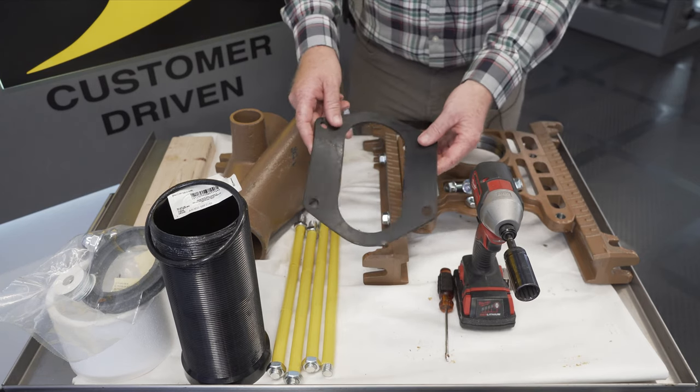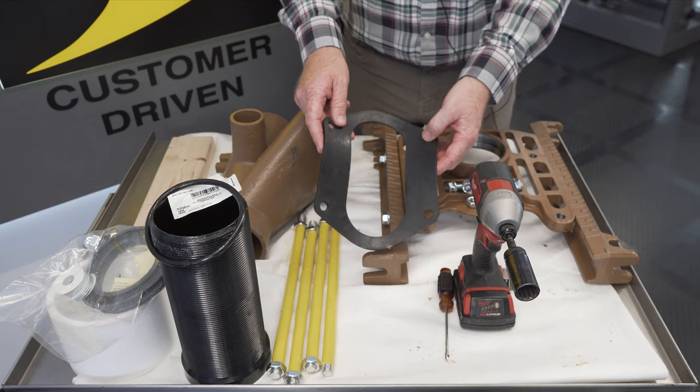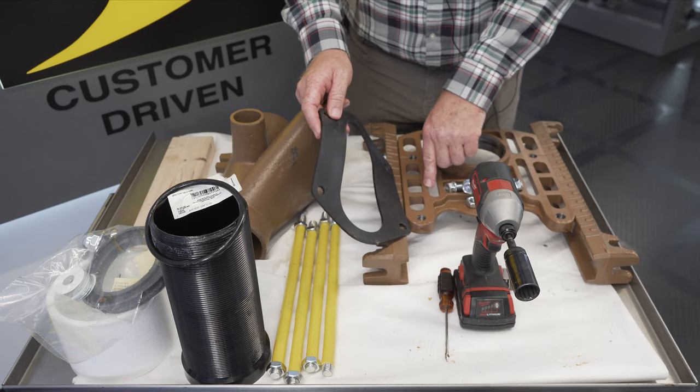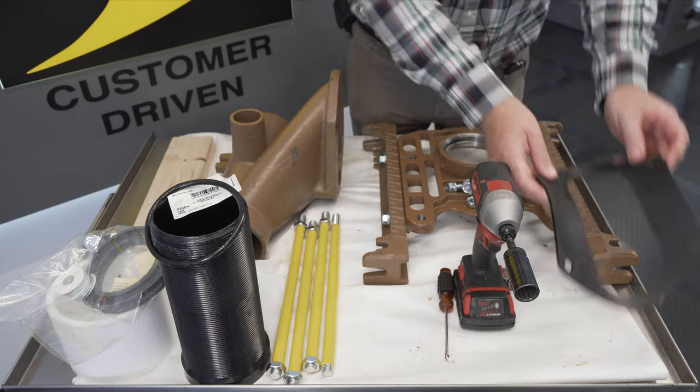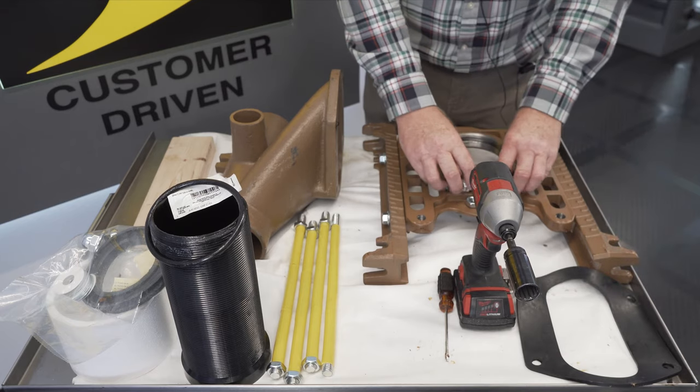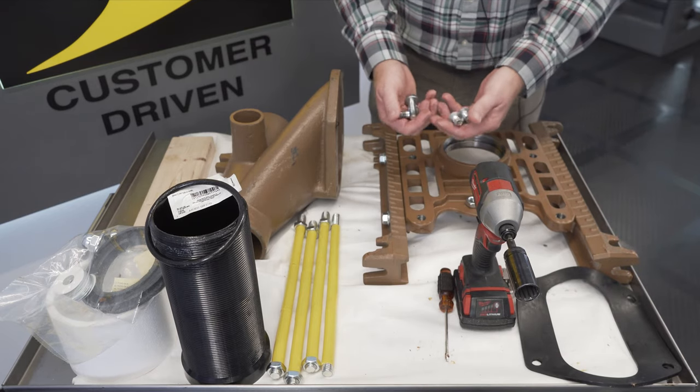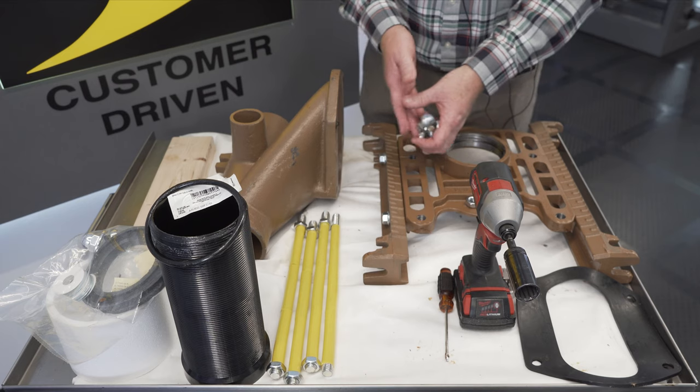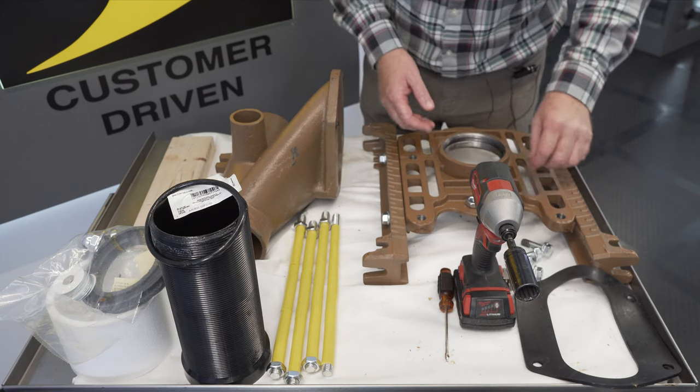We've got our gasket, which goes between our trim plate and carrier body, and I set that to the side. Then we have our four bolts that attach the faceplate to the carrier body.